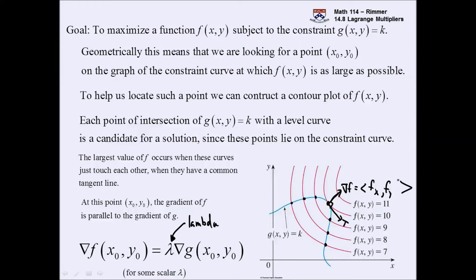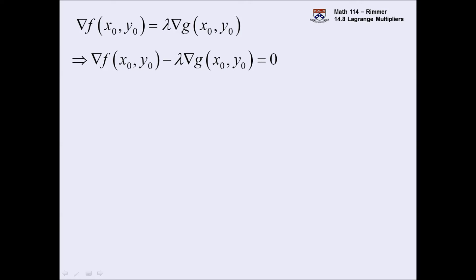One approach is to create a new function. Most times I prefer to take the equation ∇f = λ∇g and set it equal to zero by subtracting lambda times the gradient of g to the other side. When an equation is set equal to zero, you can factor and exploit that algebraically. So when I solve a Lagrange multiplier problem, I set up: ∇f minus lambda times ∇g equals zero. You don't have to do it that way — I'll also show an example solved using the original form of the equation.